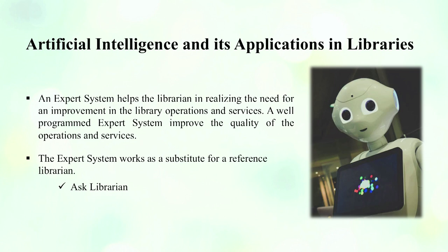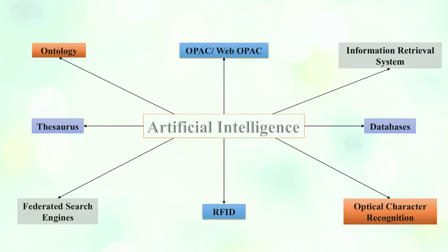Regarding artificial intelligence and its application in libraries — dear learners, the application of AI in libraries is not exactly the same as in the core areas of computer science. In libraries these are soft and conceptualized applications of AI. The first is the expert system, which helps librarians in realizing the need for improvement in library operations and services. A well-programmed expert system improves quality of operations and services. One of the best examples is 'Ask a Librarian,' which serves as a reference librarian in an AI-based system.